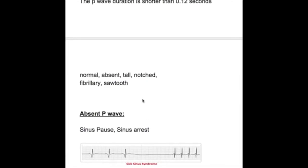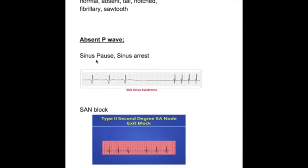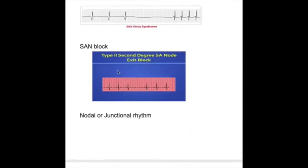What may happen to the P wave? P wave may be normal, absent, tall, notched, biphasic, fibrillary, or sawtooth. When do we have an absent P wave? Sinoatrial block, sick sinus syndrome, SA node block type 2, second-degree SA node block exit block with P wave absent, nodal or junctional rhythm.